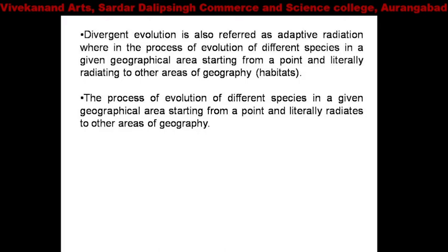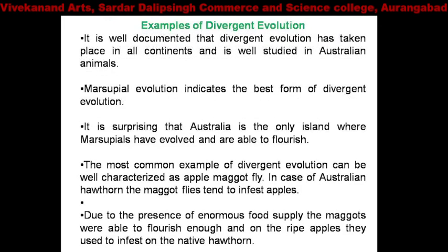For example, one geographical area's population is diverted and another population is given. So the process of evolution of different species in a given geographical area, starting from a point, radiates into other geographical areas.